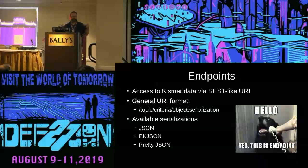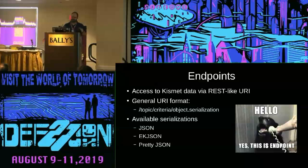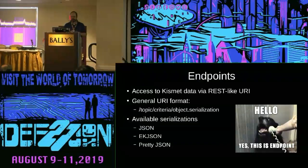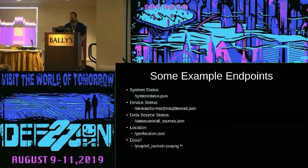The way you make all that happen is using the REST API endpoints. They have a general format: an HTTP URI, usually localhost port 2501, then a topic like system or devices, optional criteria like a key or MAC address filter, and then a serialization format. The primary serialization you'll use is JSON. There's also EKJSON — some big data thing — and prettyJSON, which makes the JSON have newlines in it.